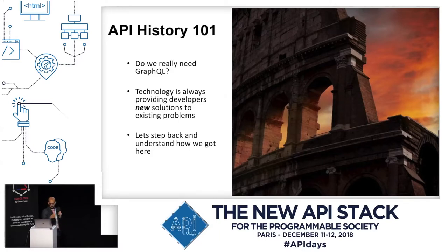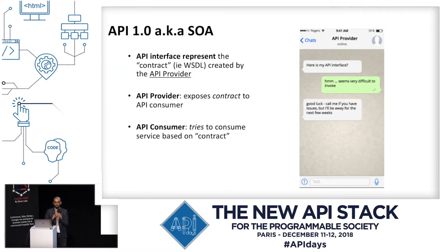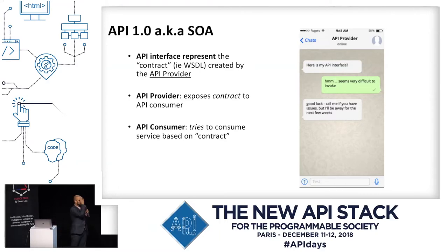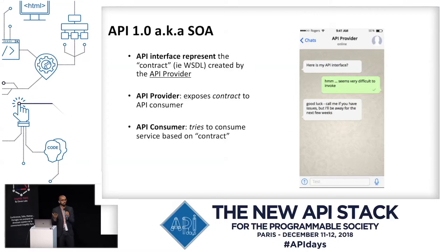Let's step back in history. I call this API 1.0 — service-oriented architectures. In the SOA days, the main goal was: I have a system here, maybe .NET, and another system in Java, and I need a way for those two systems to talk to one another in a common format. SOAP was the messaging format, and WSDL was the way to describe the service in a standard format.